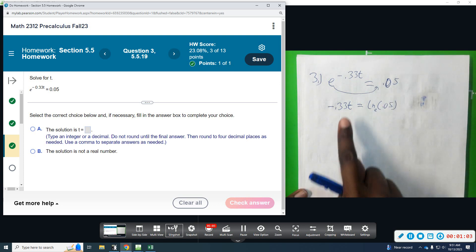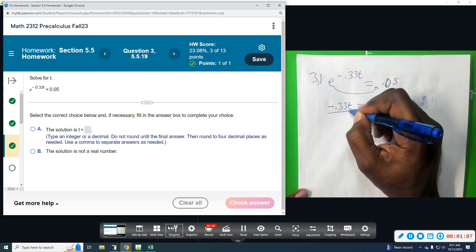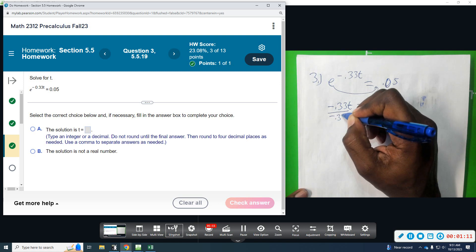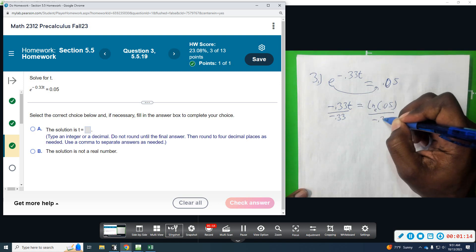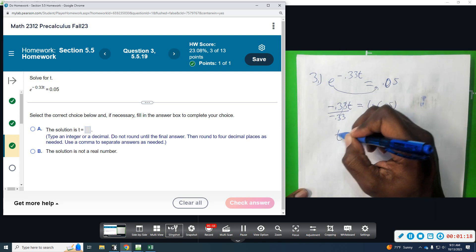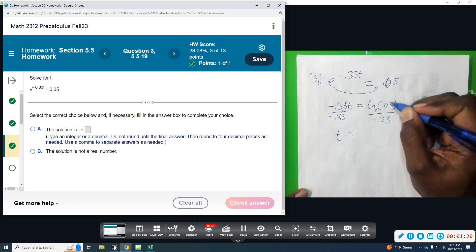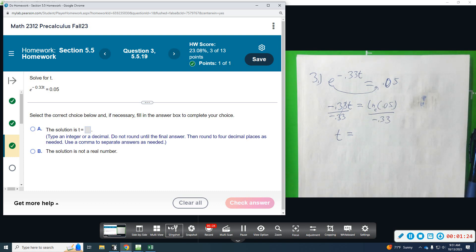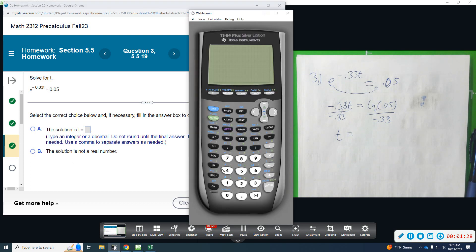At this point, we'll almost have t by itself. We just need to divide by the negative 0.33 to get rid of it since it's being multiplied. So divide by the negative 0.33. This will divide and give us 1, which leaves us with t equals whatever this is. So we're going to put this in a calculator. This is not something that we can do by hand.